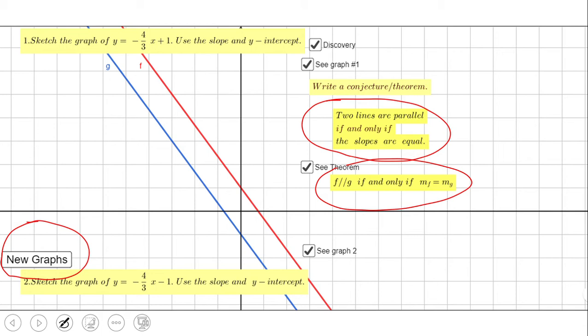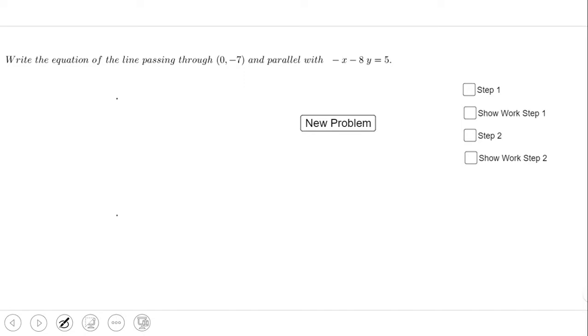Now let's see what a problem looks like. We have an equation given in standard form: negative x minus 8y equals 5, and we need to find the equation of a parallel line.